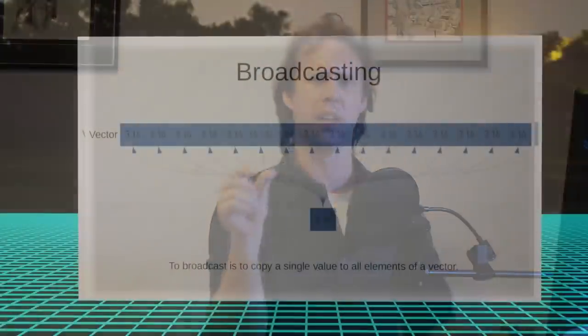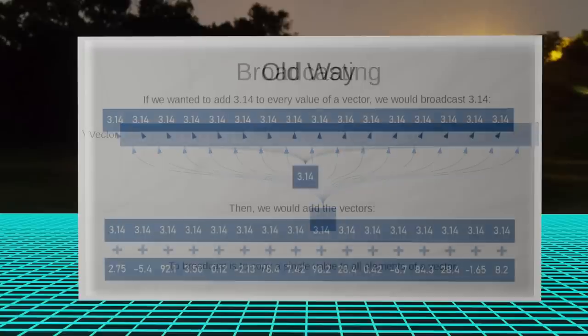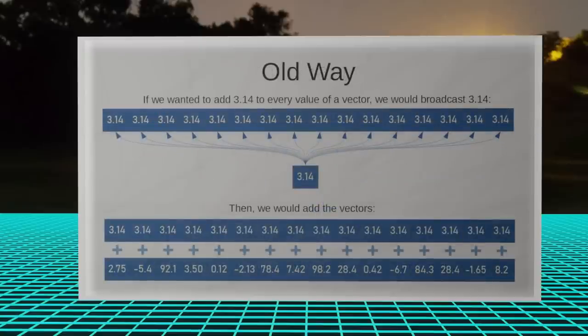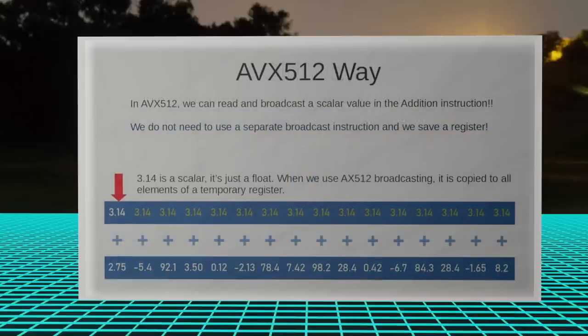AVX512 offers automatic broadcasting from memory in many instructions. To broadcast is to read one value and copy it to all of the elements of a register. It's quite a common thing to read some value into a vector register, then broadcast it, and then perform some operation using that value. AVX512 actually offers the ability to automatically read and broadcast in one step.